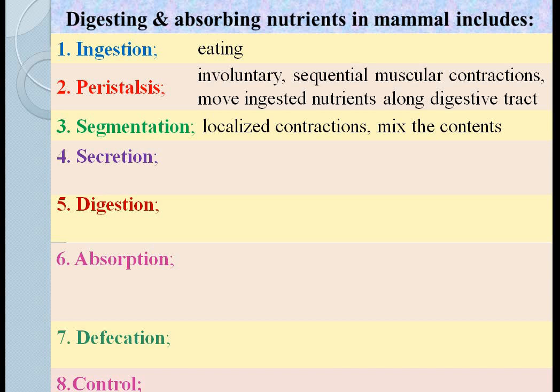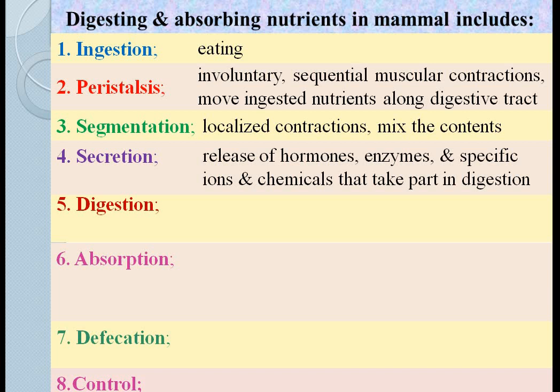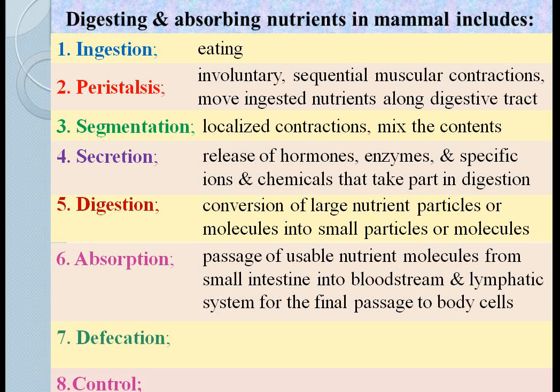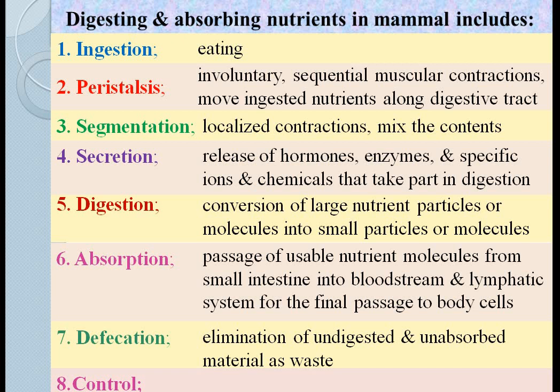Segmentation refers to localized contractions that result in mixing the contents of the digestive tract. In different components of the alimentary canal, various types of hormones, enzymes, specific ions and chemicals are secreted that participate in digestion. As a result, large nutrient particles are broken down into smaller ones. The digested food is absorbed from the small intestine into the bloodstream and lymphatic system to be transported to body cells. The undigested and unabsorbed material is eliminated as faecal material — this process is called defecation. All these processes are controlled by local, nervous and hormonal systems.